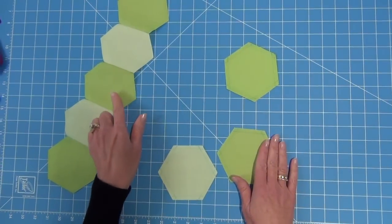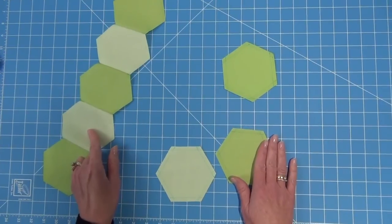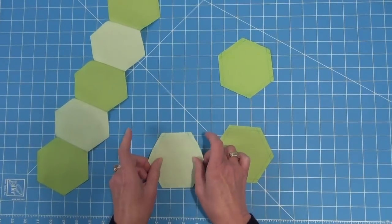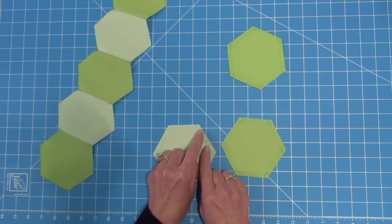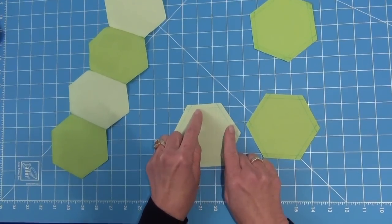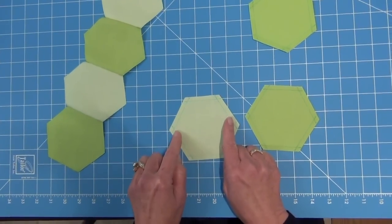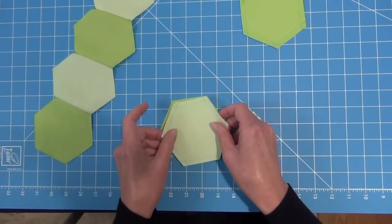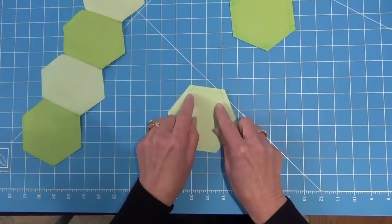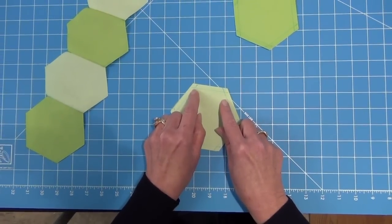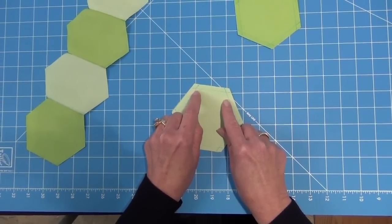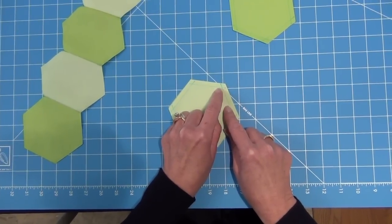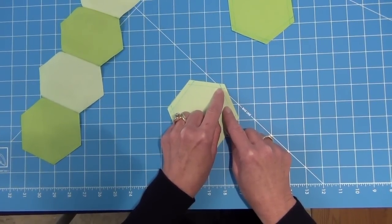To piece hexagons, we join them together by rows, and then we sew the rows together. Now to do this, you want to start out by taking each of your hexagons and marking your seam line a ¼ inch away from the outside edge on all sides. And then what you're going to do is take two of your hexagons, and with right sides together, you're going to sew in between the intersecting lines of those two seam lines from here all the way to here. And make sure you back tack at the beginning and at the end, so they're nice and secure.